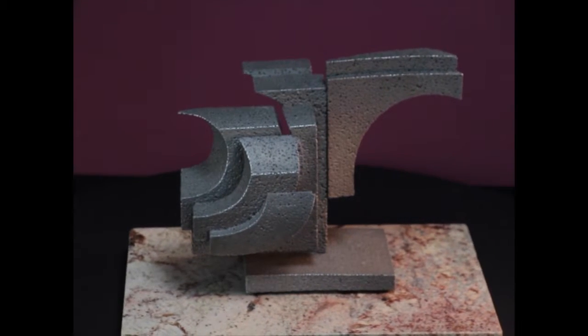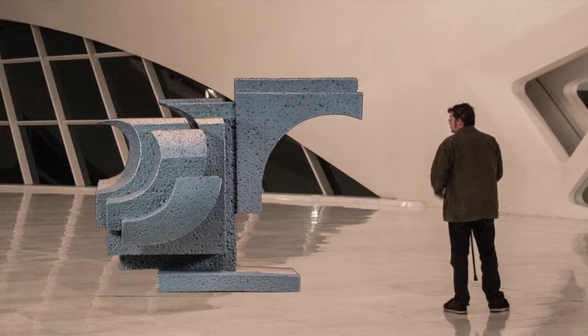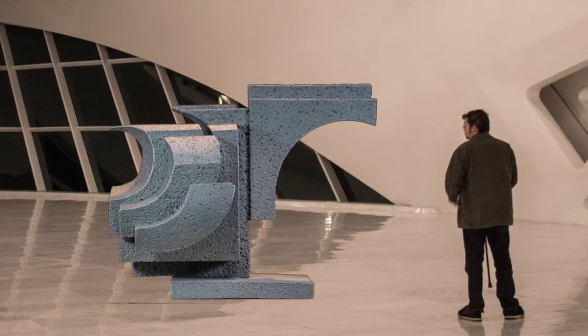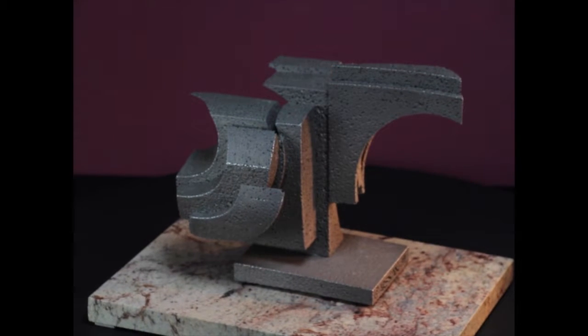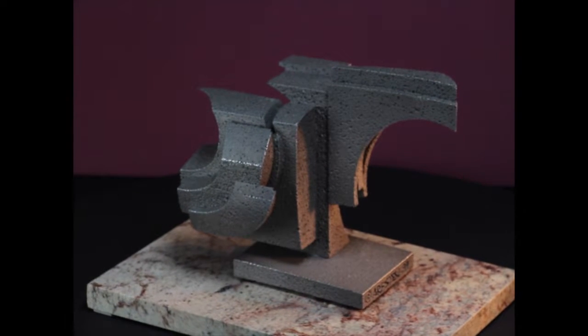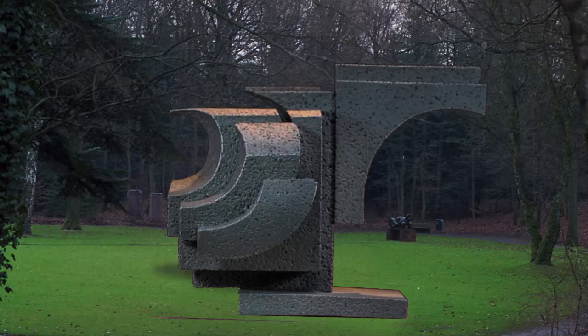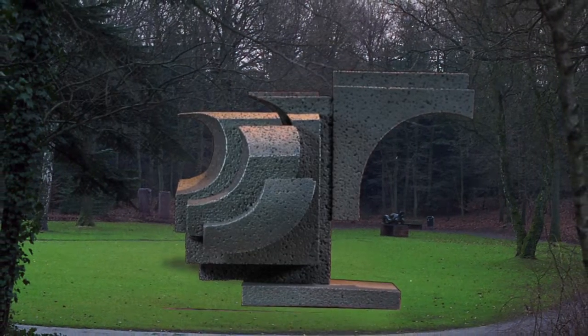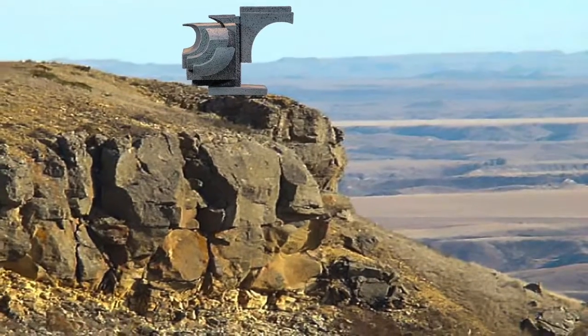Many times, an architect will build a model building so the client can get a better idea of what the building looks like rather than trying to interpret it from some blueprints. If you have a model, you can put this in front of the building model and get a real accurate idea of what it is.